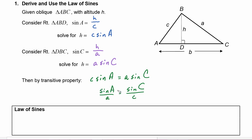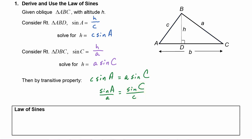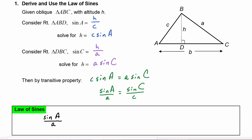Notice the relationship: angle A has little a as its opposite side, and angle C has little c as its opposite side. It turns out we can make a proportion — the sine of any angle to its opposite side equals the sine of any other angle divided by its opposite side. This is known as the law of sines: sine A over a equals sine B over b equals sine C over c.